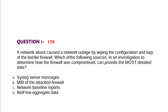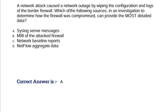Question: A network attack caused a network outage by wiping the configuration and logs of the border firewall. Which of the following sources in an investigation to determine how the firewall was compromised can provide the most detailed data? Option A, syslog server messages. Option B, MIB of the attacked firewall. Option C, network baseline reports. Option D, NetFlow aggregate data. Correct answer is Option A.